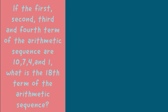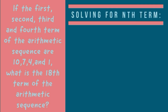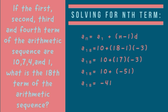Let us solve for the common difference first by substituting: d equals 7 minus 10, which equals negative 3. For the missing terms, we use a sub n equals a sub 1 plus (n minus 1) times d, where a sub n is a sub 18, a sub 1 equals 10, n equals 18, and d equals negative 3. Our formula is: a sub 18 equals 10 plus (18 minus 1) times negative 3. Solving the parenthesis: 18 minus 1 equals 17; then 17 times negative 3 equals negative 51. So a sub 18 equals 10 plus negative 51, giving a sub 18 equals negative 41.